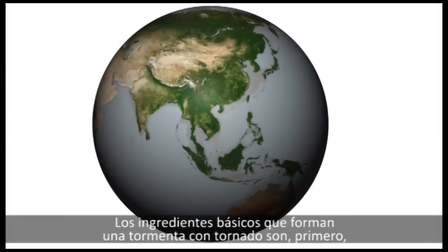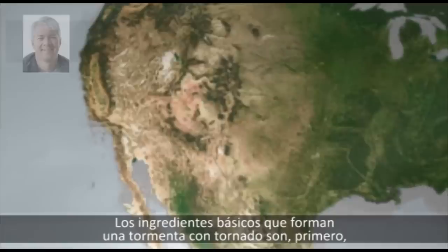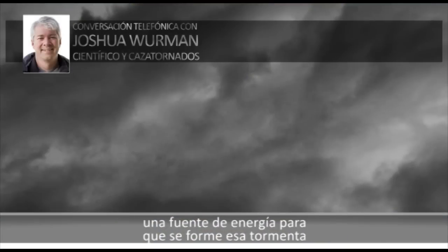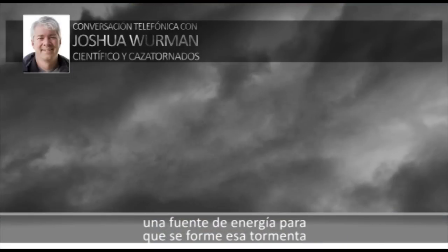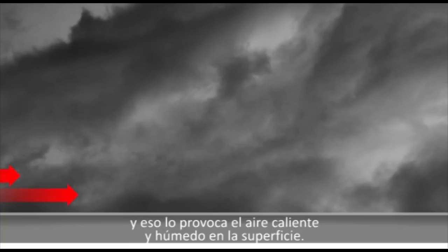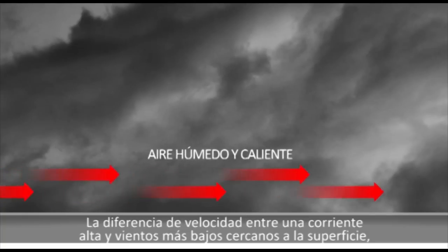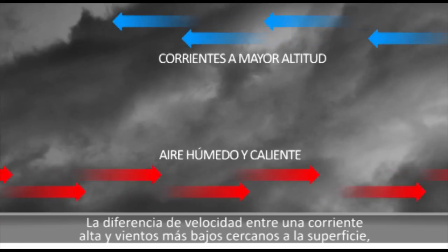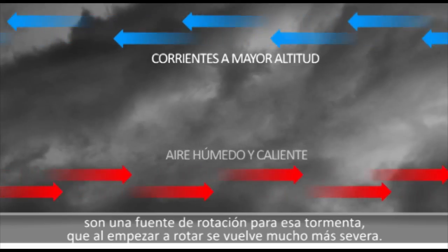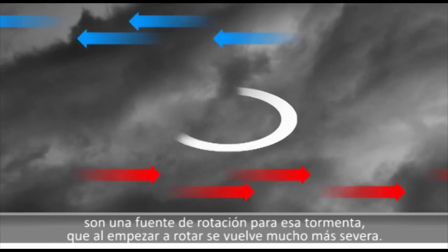The basic ingredients that go into making a tornadic storm are first a source of energy for that thunderstorm to form in the first place, and that is provided by hot, humid air at the surface. The differences in wind speeds between that jet stream aloft and the slower winds near the surface provides a source of rotation for those thunderstorms.